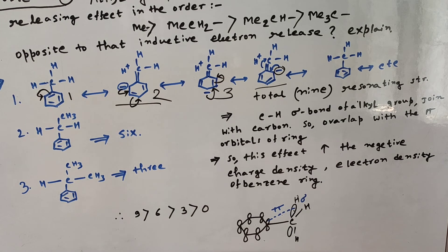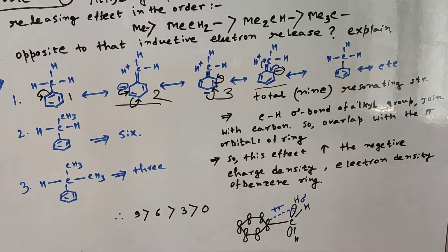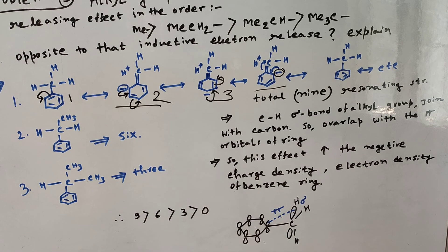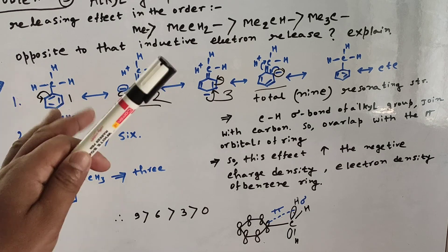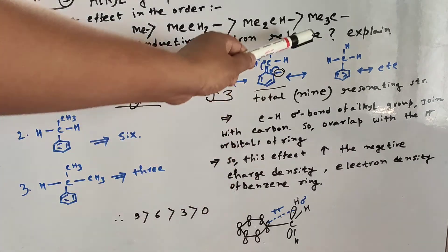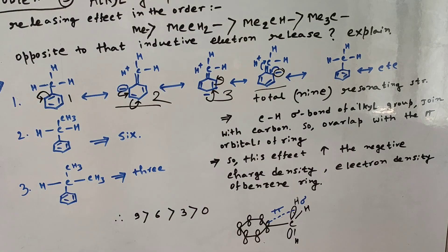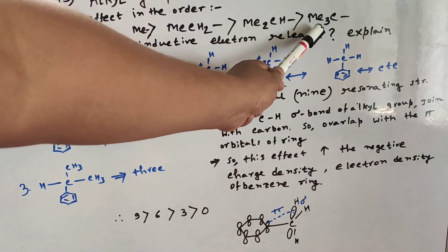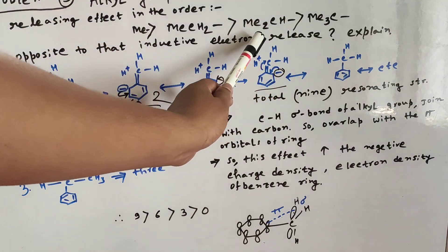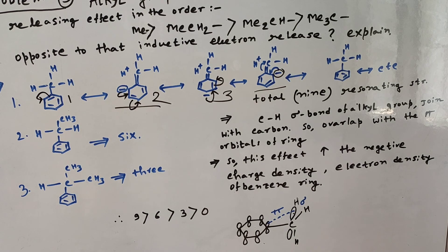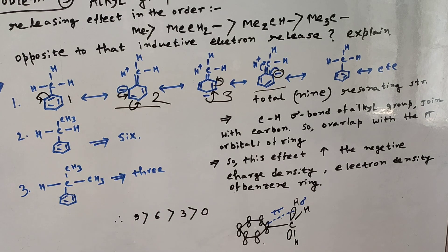So nine is greater than six, greater than three, greater than zero — these are the hyperconjugable resonance forms. This is a very important concept. In the case of inductive effect, the order is opposite because only the +I effect is counted: tert-butyl first, then isopropyl, then ethyl, then methyl. But in the case of hyperconjugation, the order is just the reverse.